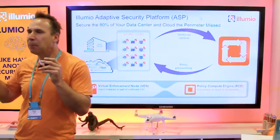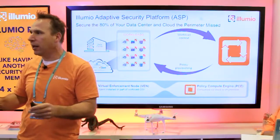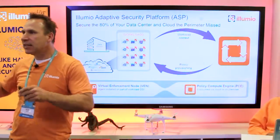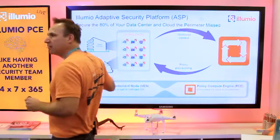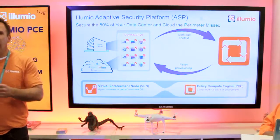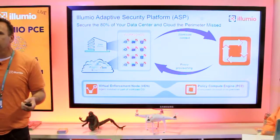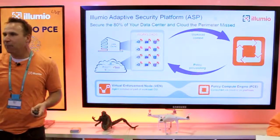And what it does, it is going to compute the optimal security for every single workload, regardless of where they're running. And it's going to send it back down to these VENs. And the VENs take that and they use what's already in these operating systems to write the rules. So if it's a Linux workload, we use what's already there. We use IP tables.